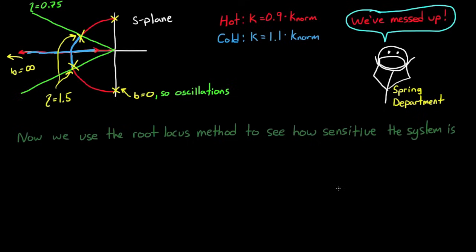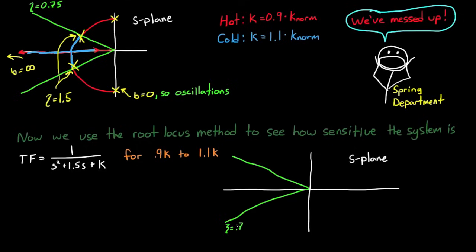And now we can use the root locus method to determine how sensitive the system is to changes in the spring constant. You can replace the spring constant with a variable k in the transfer function. Then either manually or with a software package you can run the root locus with k varying from 90% to 110% of the ideal spring constant. And when you do that you'll see the following graph in the s-plane. First let me redraw our requirement which is the lines of constant damping ratio.